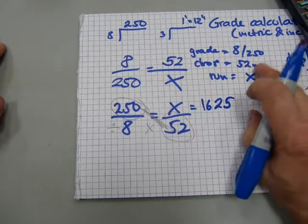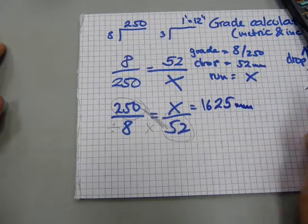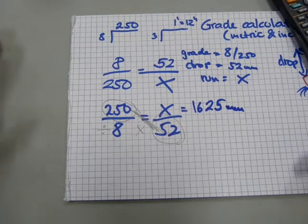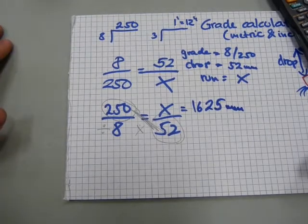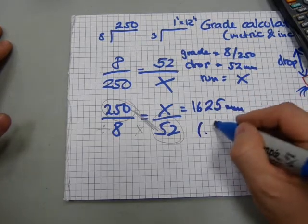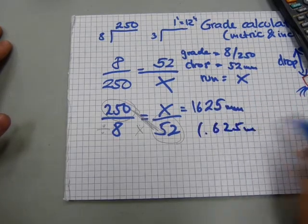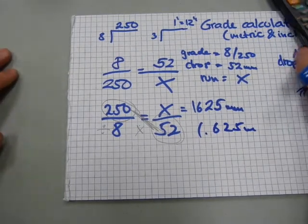Now, because that amount was in millimeters, that amount will also be in millimeters. The run of the pipe is 1625 millimeters. And if you need to convert it to meters, that would be 1.625 meters. That's how this version works.